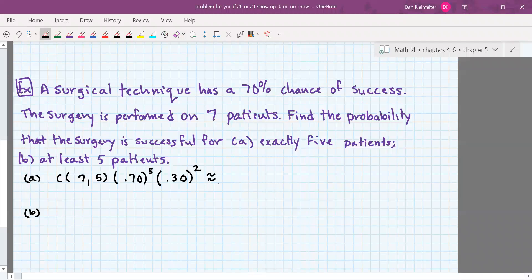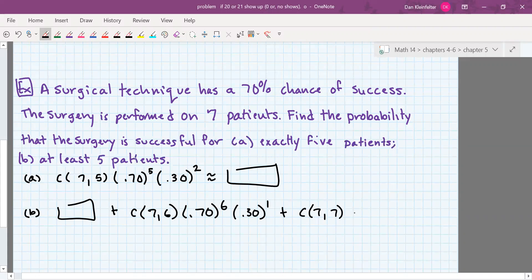So for this one, we'll have exactly five, which is our answer to this, whatever it turns out to be. And then for six. And then finally for all. Okay, let's go ahead and see what that works out to.